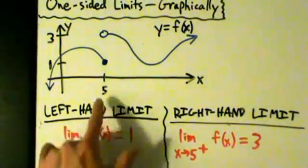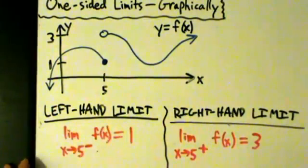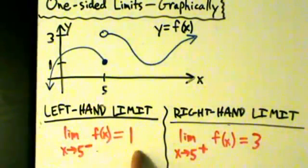Now notice that when x equals 5, y is actually 1 and not 3. But remember, for limits, that doesn't matter. So the limit as x approaches 5 from the left of f(x) is 1, and the limit as x approaches 5 from the right of f(x) is 3.